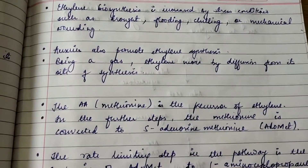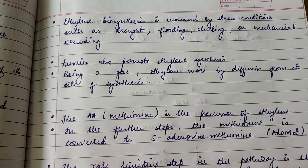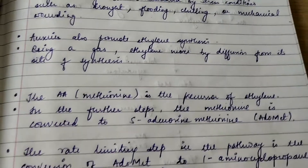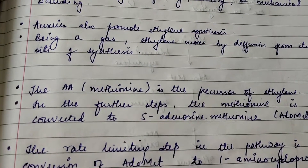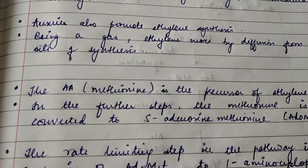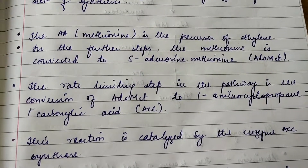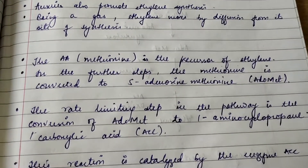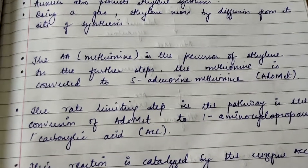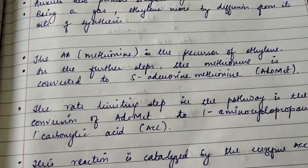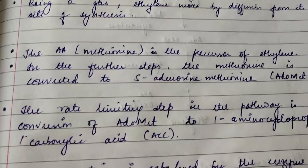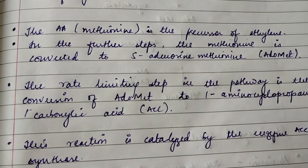Being a gas, ethylene moves by diffusion from its site of synthesis. Since diffusion is the process by which gases move from high concentration to low concentration, ethylene travels this way through the plant. The amino acid methionine is a precursor of ethylene — it acts as the starting material for ethylene biosynthesis. Ethylene biosynthesis begins from methionine.